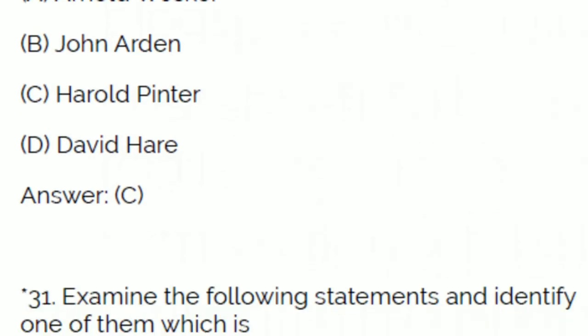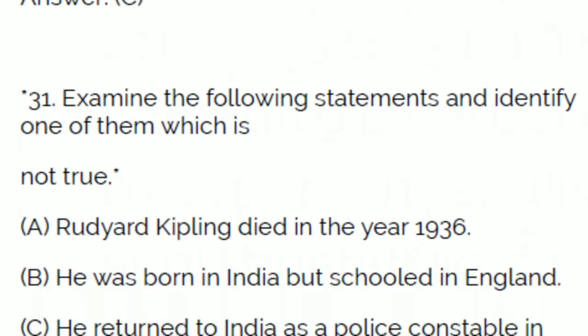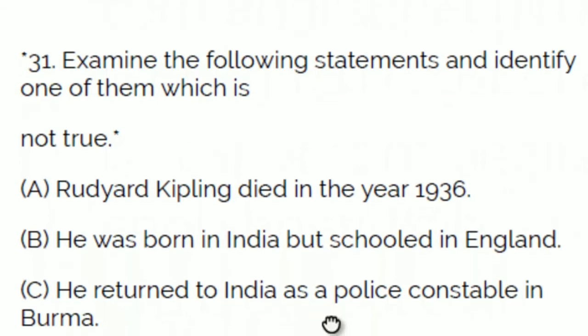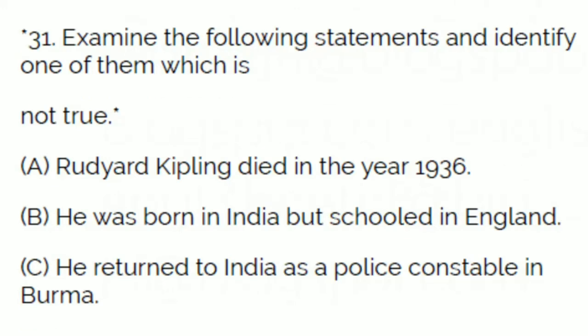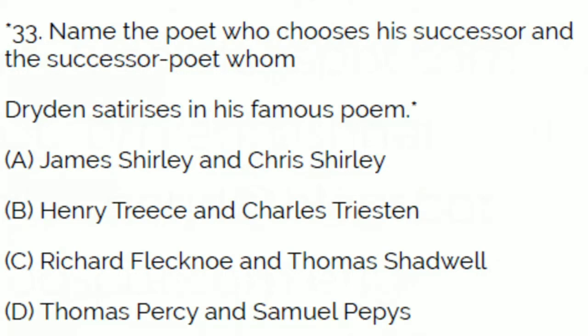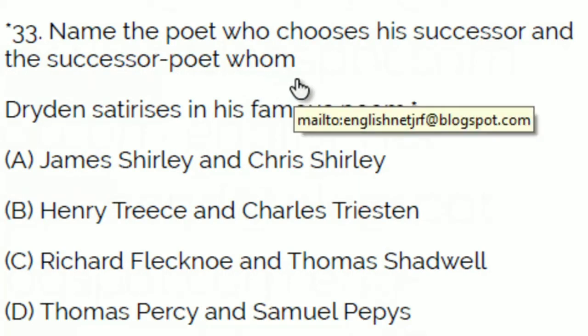Examine the statements and identify which one is not true. A: Rudyard Kipling died in 1936. B: He was born in India but schooled in England. C: He returned to India as a police constable. The answer is C — he did not return to India as a police constable.